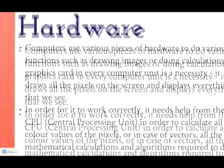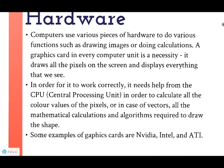Hardware. Computers use various pieces of hardware to do various functions such as drawing images or doing calculations. A graphics card in every computer unit is a necessity. It draws all the pixels on the screen and displays everything that we see. In order for it to work correctly, it needs help from the CPU in order to calculate all the colour values of the pixels, or in the case of vectors, all the mathematical calculations and algorithms required to draw the shape. Some examples of graphics cards are Nvidia, Intel and ATI.